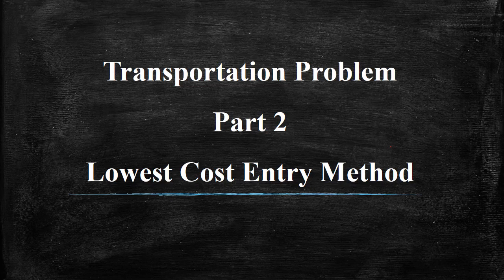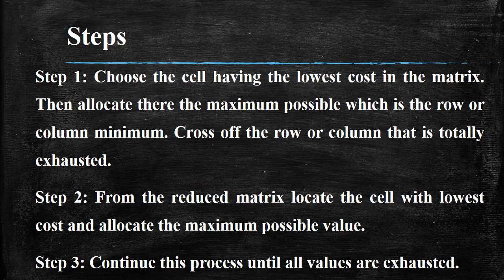In this second part, we will take the lowest cost entry method, also called the matrix minima method, to solve the transportation problem. The first step is to choose the cell having the lowest cost. Then allocate the maximum possible value, which is the row or column minimum, and cross off the row or column that is totally exhausted.